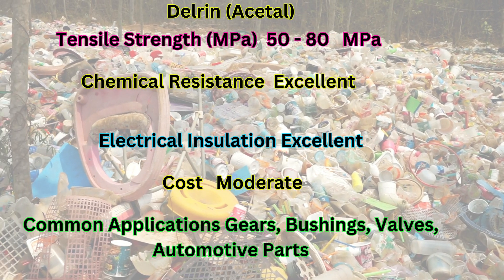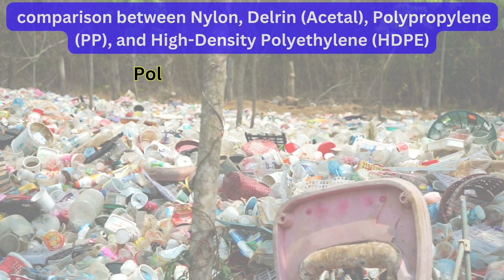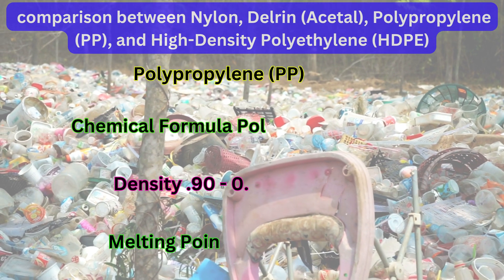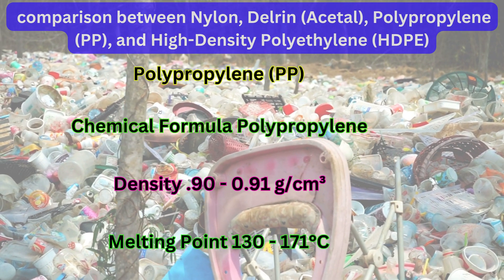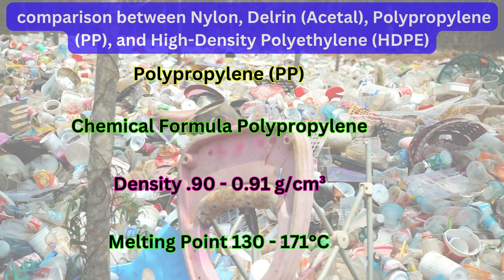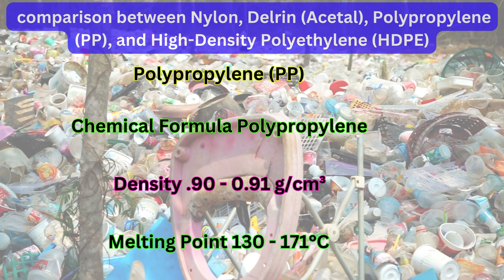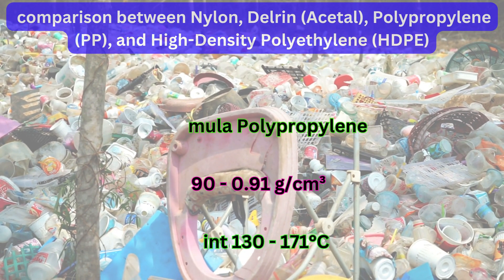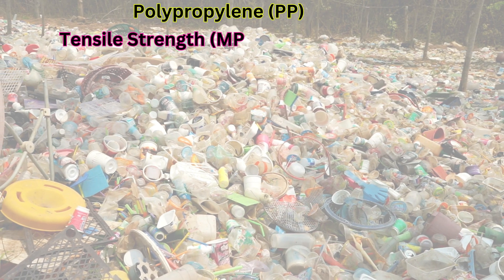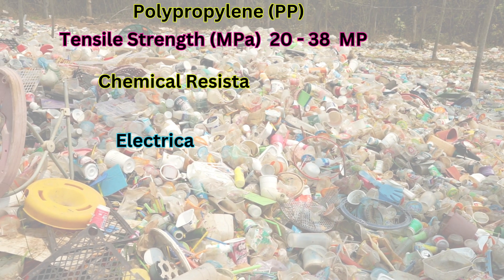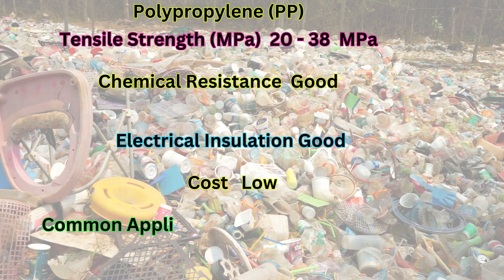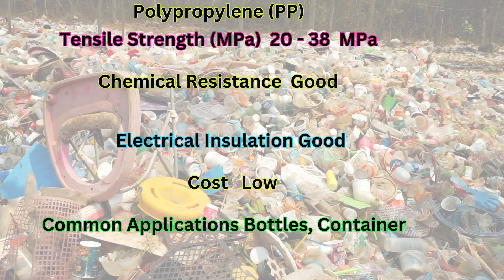Polypropylene (PP) — chemical formula: polypropylene; density: 0.90 to 0.91 g/cm³; melting point: 130 to 171°C; tensile strength: 20 to 38 MPa; chemical resistance: good; electrical insulation: good; cost: low; common applications: bottles, containers, packaging.